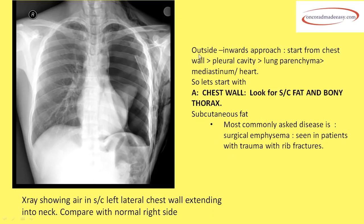We begin with the outside-inward approach — starting by looking at the chest wall, then the pleural cavity, then the lung parenchyma, then the mediastinum and the heart. In the chest wall, look for the subcutaneous fat, bony thorax, and chest wall soft tissues.